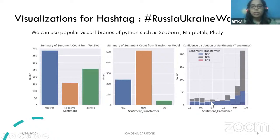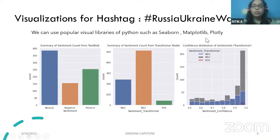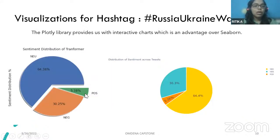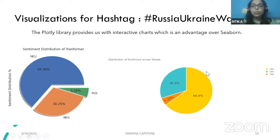Most sentiments were predicted with higher confidence, around 0.9 to 1 range, so we can rely that our sentiments are analyzed in a confident manner. For plotting visualizations, I used popular Python visual libraries: Seaborn, Matplotlib, and Plotly. The distribution shows the majority of sentiments for this hashtag were neutral, then negative, and very few positive. Plotly has one advantage over Seaborn — it gives us interactive charts.